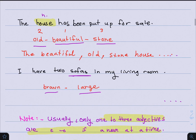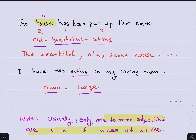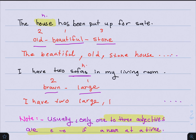Now for the second sentence: I have two sofas in my living room. The noun is sofas, and adjectives go before the noun. We have brown and large. The first thing is size or shape — large — and then color — brown. So you will say: I have two large, brown sofas in my living room.